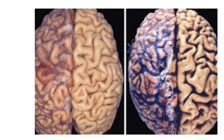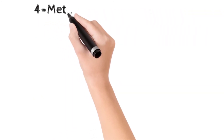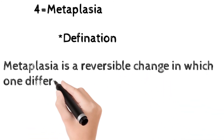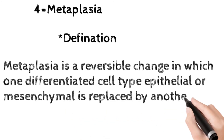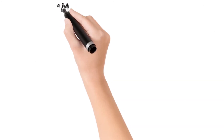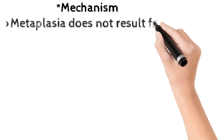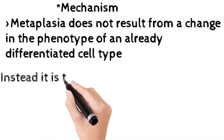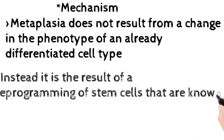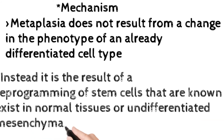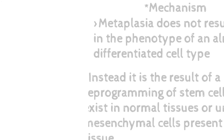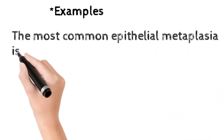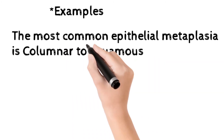In the diagram, the right side of the brain becomes atrophic due to low blood supply. After atrophy, come to metaplasia. The definition of metaplasia: it is a reversible change in which one differentiated cell type — epithelial or mesenchymal — is replaced by another cell type. The mechanism is that metaplasia results not from a change in the phenotype of already differentiated cells, but from reprogramming of already-present stem cells into a new cell type.